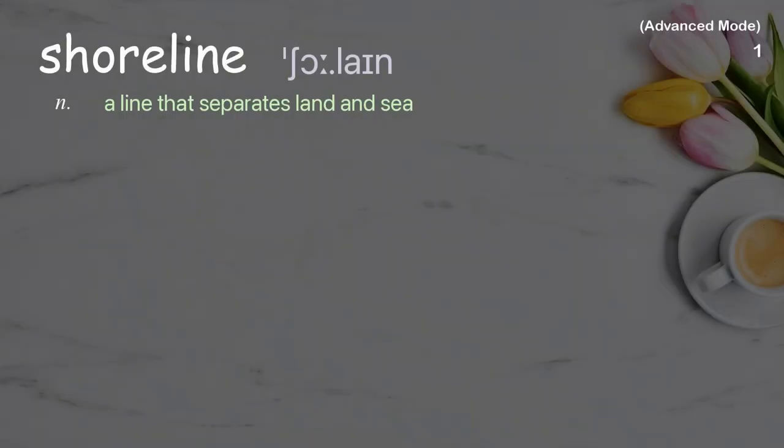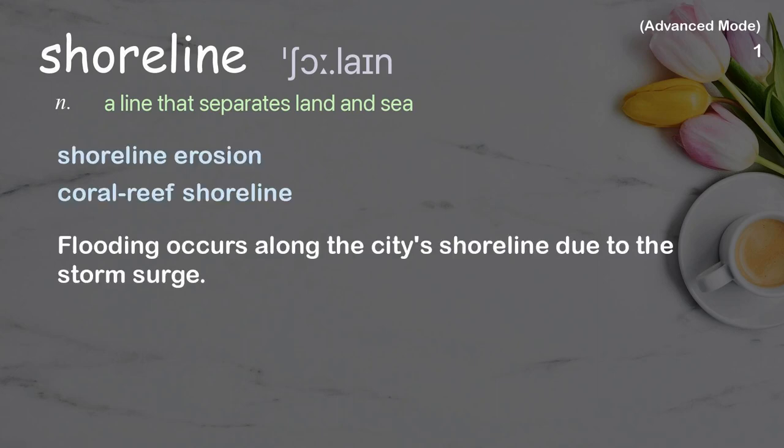Shoreline: A line that separates land and sea. Examples: Shoreline erosion. Coral reef shoreline. Flooding occurs along the city's shoreline due to the storm surge.